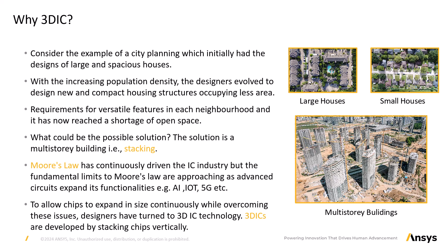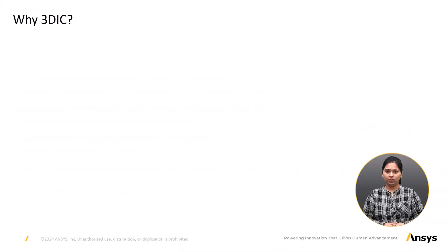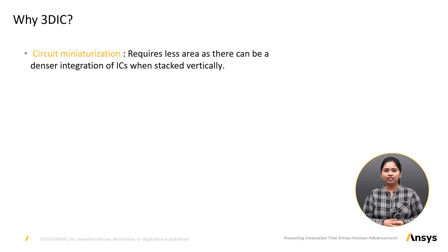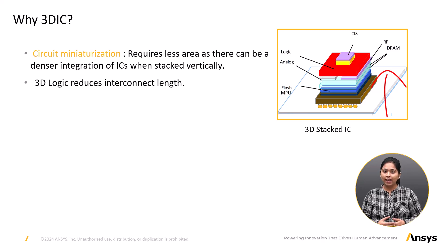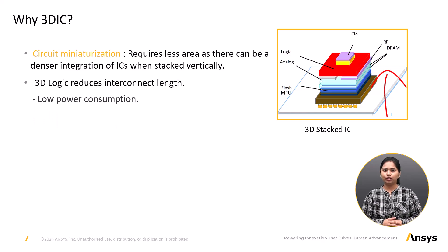3D ICs are developed by stacking chips vertically. With 3D IC integration, circuit miniaturization is achievable as dies are stacked vertically. 3D architecture helps to reduce interconnect length — vertical stacking minimizes the interconnection length between dies that interface with one another, which helps reduce power consumption while simultaneously providing high speed with faster interactions.